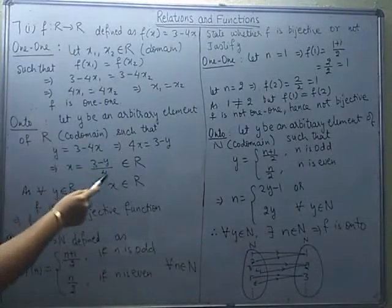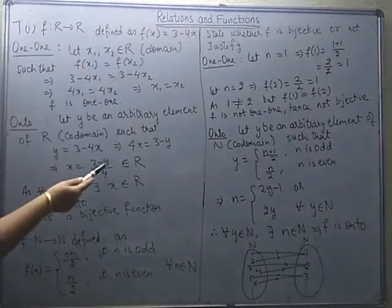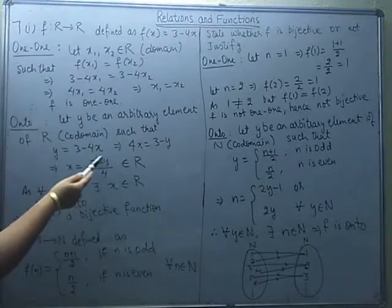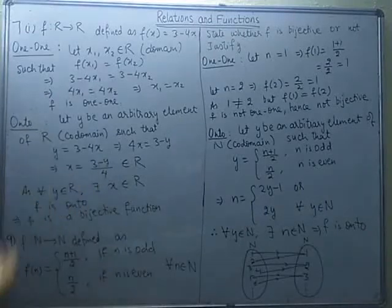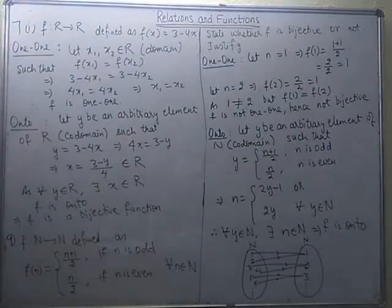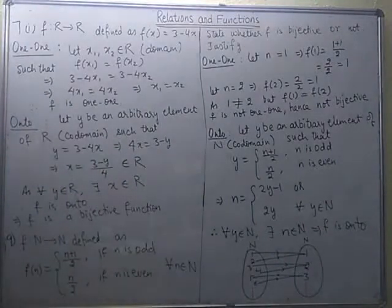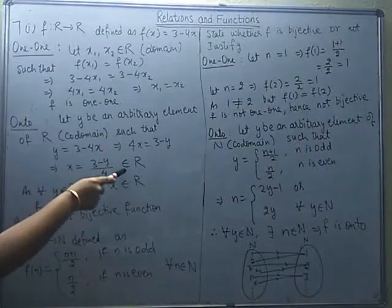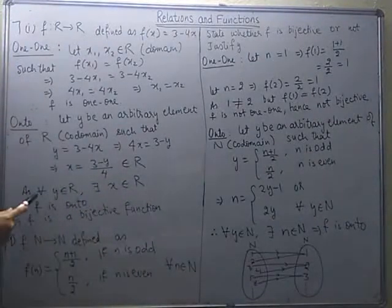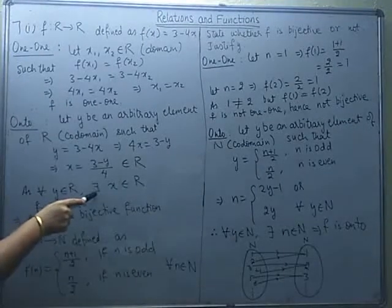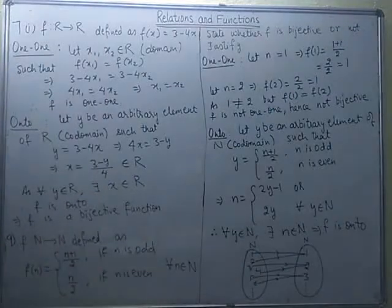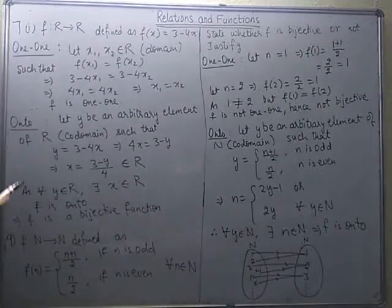The denominator is 4, so it will never take an indeterminate form. If y = 3, then x = 0. If y is less than 3, x takes positive real values. If y is greater than 3, x takes negative real values. But in any case, x comes out to be a real number. So for all y belonging to the co-domain R, there exists x also belonging to R. Therefore f is onto, and since it is both one-one and onto, it is a bijective function.